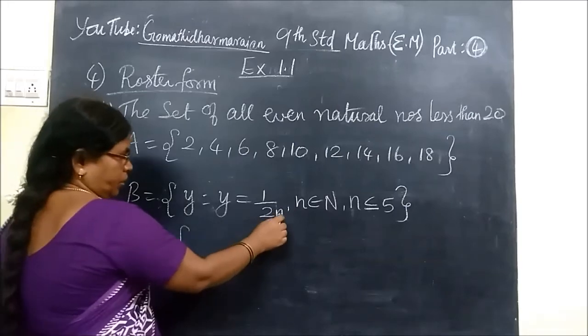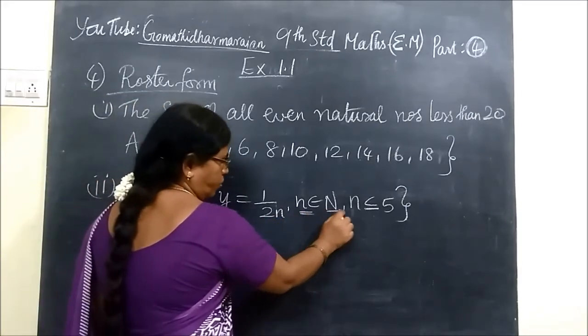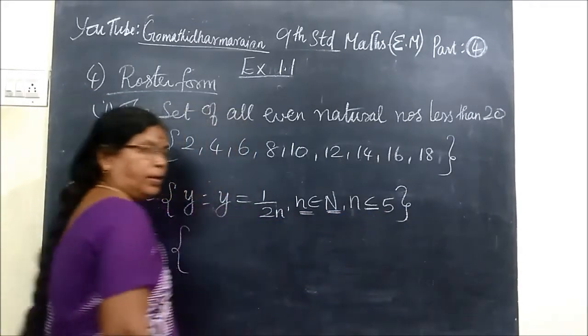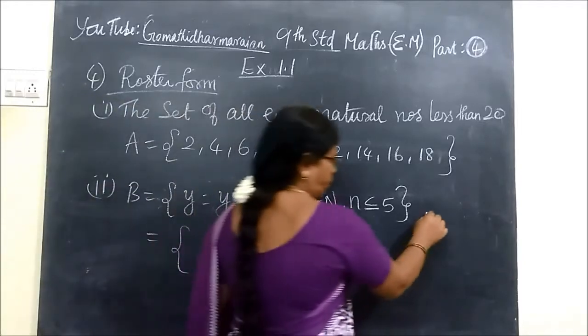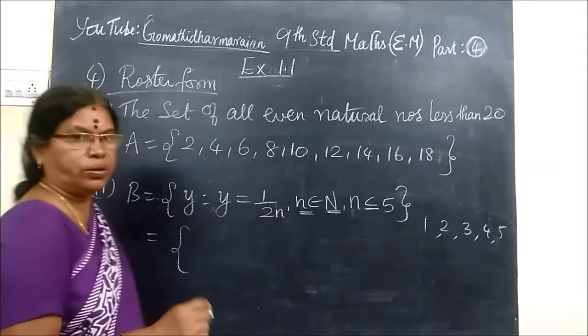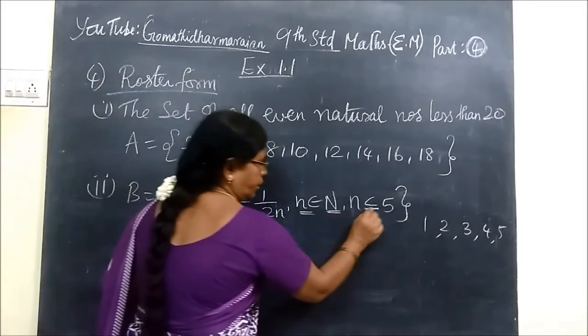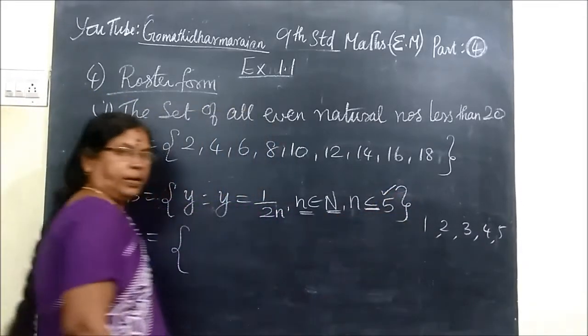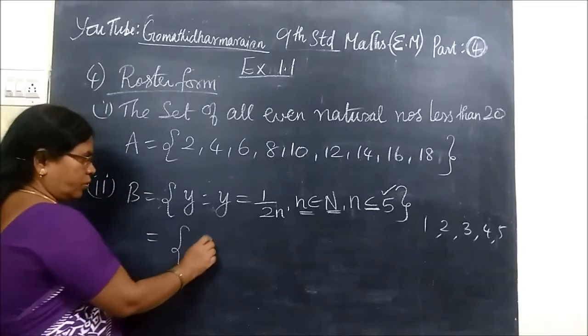Here you are writing in roster form: 1 by 2n, n belongs to natural number and n less than or equal to 5. That means we are taking 1, 2, 3, 4, 5. We substitute 1, 2, 3, 4, 5. Since it is equal to, you are considering 5 also.